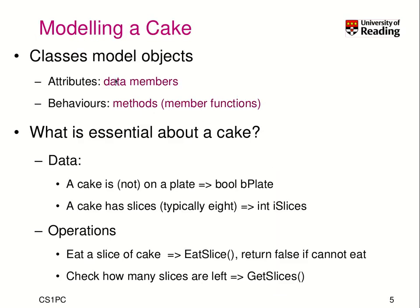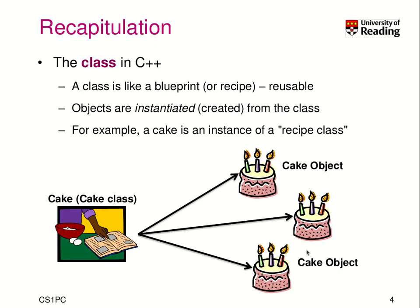So how do we model a cake? This is just the beginning of a model, very basic, to be extended. We know that in C++ classes model objects, and to model any object in real life, it consists of attributes and behaviors. Attributes are modeled in C++ as data members — variables tied to a specific object where each object can have different values. For example, a number of slices as an integer that differs per cake object, and we put this description into our blueprint.